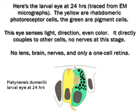This eye senses light, direction, even color. It directly couples to other cells — no nerves at this stage. No lens, brain, nerves, and only a one-cell retina.